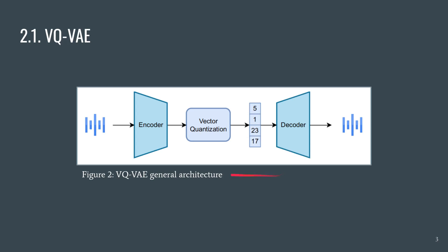The main idea of the VQ-VAE is that given an audio representation — a spectrogram or a waveform — we encode it and quantize it into a sequence of discrete tokens. In this case, this waveform would be represented by the tokens 5, 1, 23, and 17. This means that if we go to the codebook and take the fifth, first, 23rd, and 17th tokens, we can use those embeddings to feed the decoder, and the decoder would regenerate the original waveform. The purpose of this model is to generate discrete codes that we can predict with our language model.